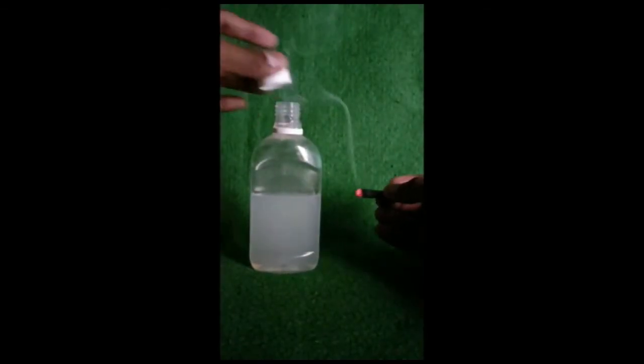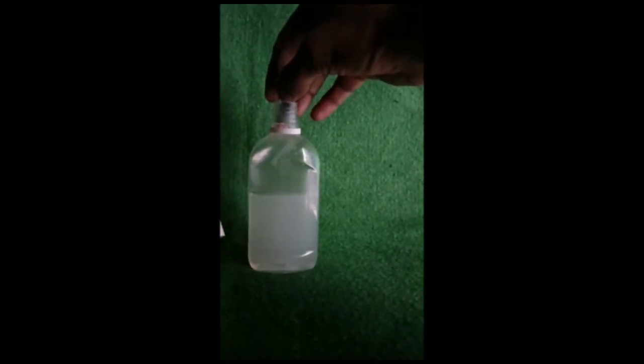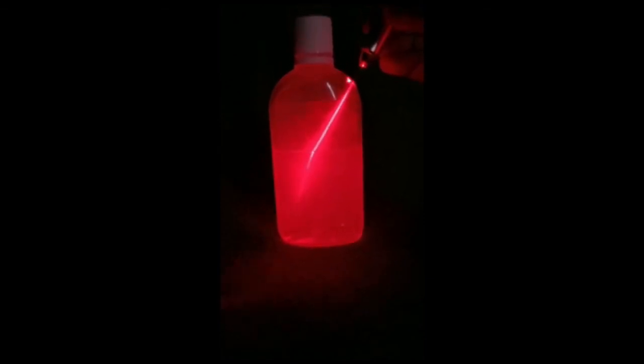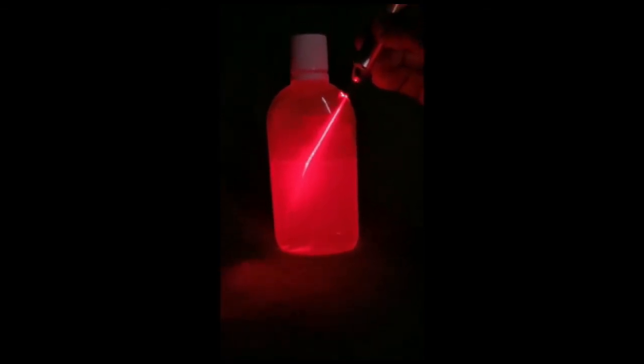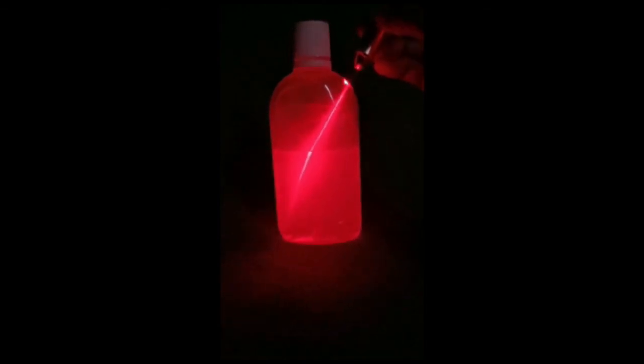Then add some smoke to the bottle. Now point the laser again and you can see the light as it goes from a rarer medium to a denser medium. It bends towards the normal, then you can see the light reflection.